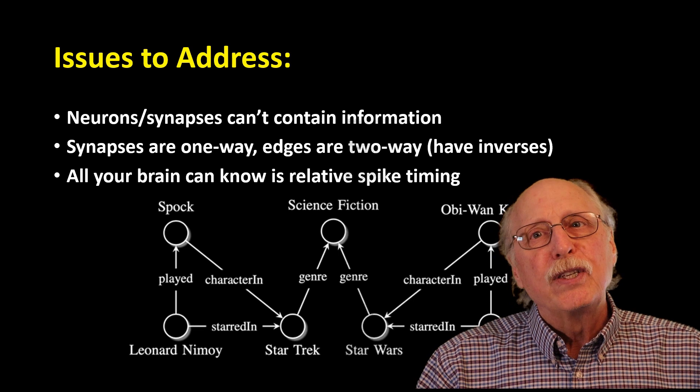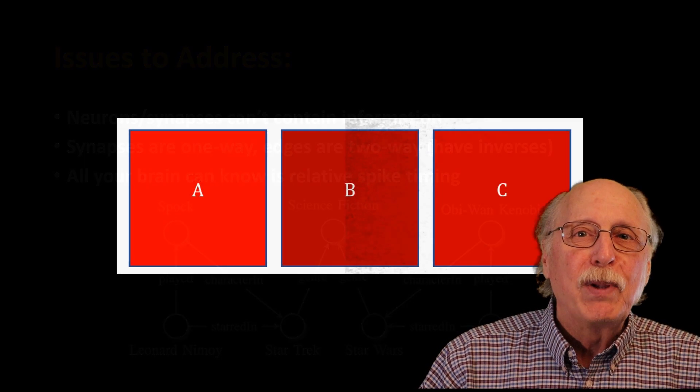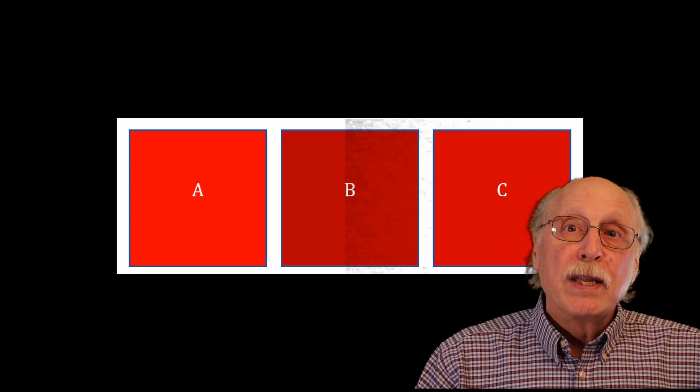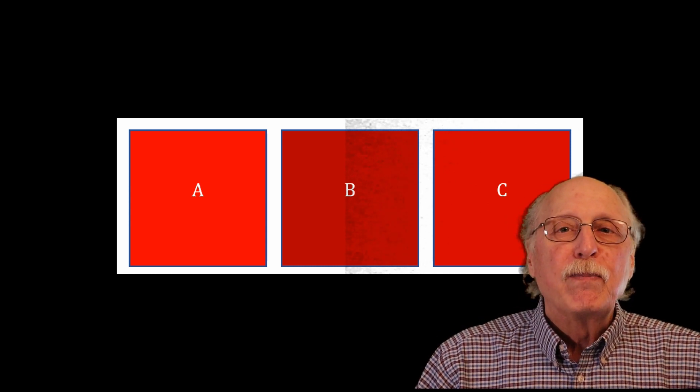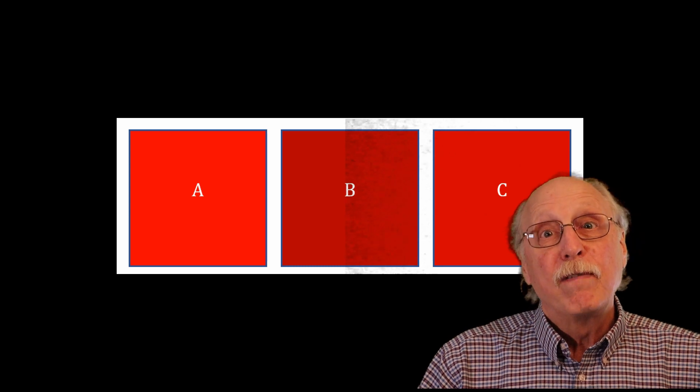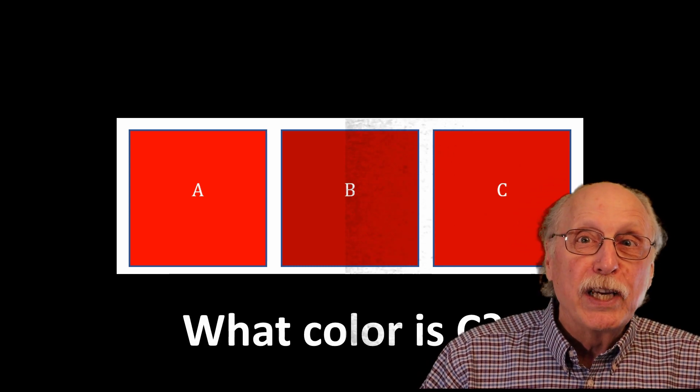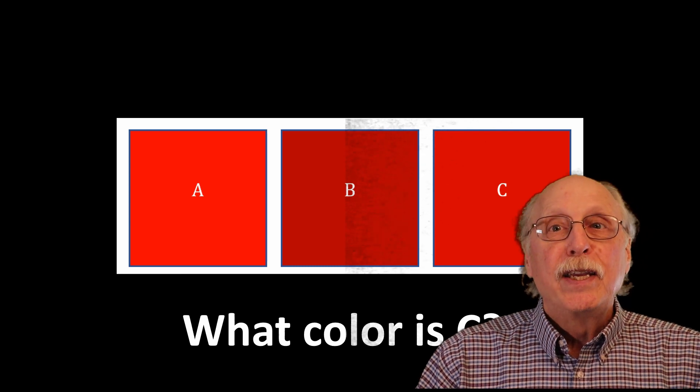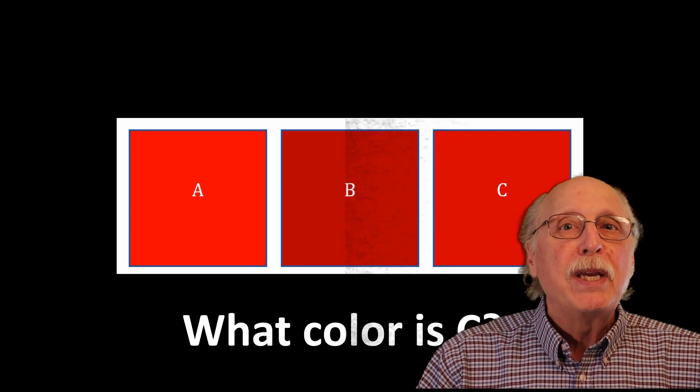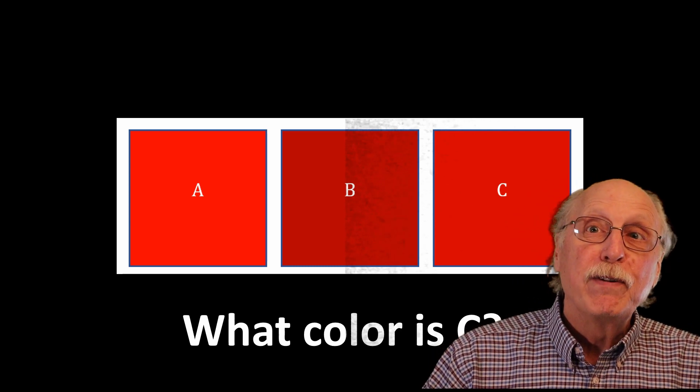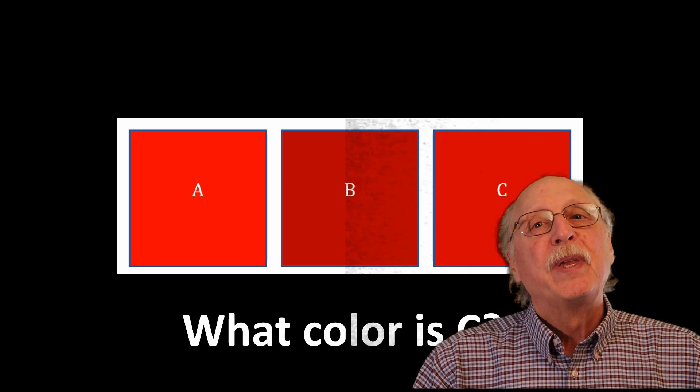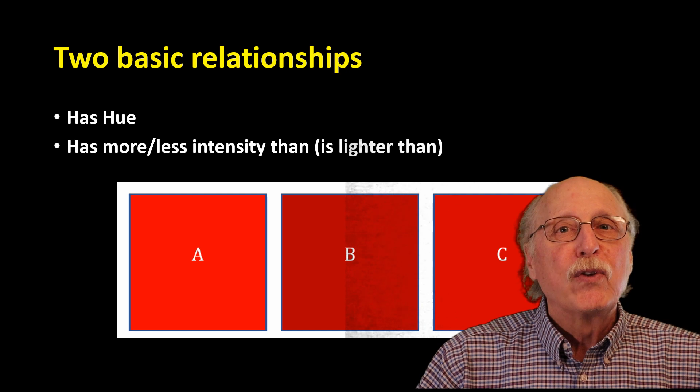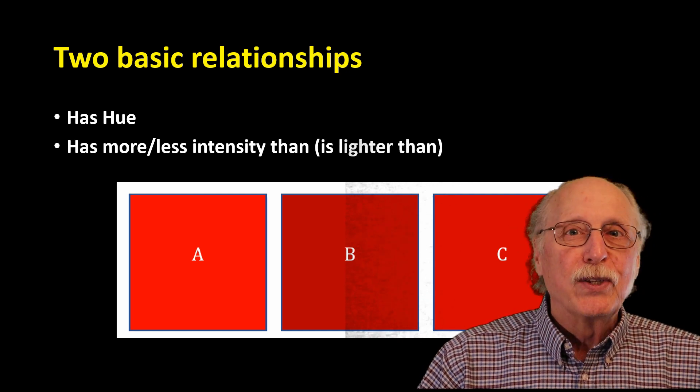Even this simple graph would be immensely complex when represented in neurons. So in the previous video I introduced these very simple questions. Given that A is red and B is red, what color is C? Further I asked, given that A is lighter than B, what is the relationship of A to C? Now I'm going to go through how to build a knowledge graph in neurons which can answer these very simple questions.